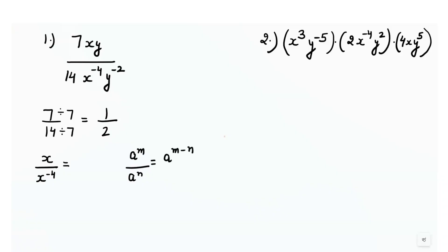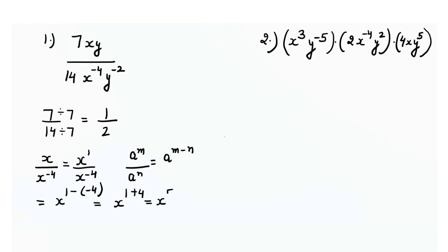Since x doesn't have a given power, we take it as 1. So it is x raised to power 1 over x raised to power minus 4. Using the formula, it would be x raised to power 1 minus minus 4. Negative times negative is positive, so 1 plus 4 gives us x raised to power 5.